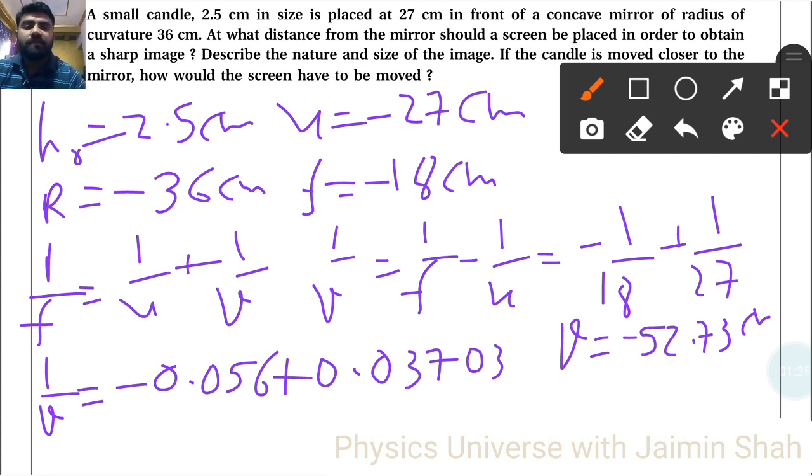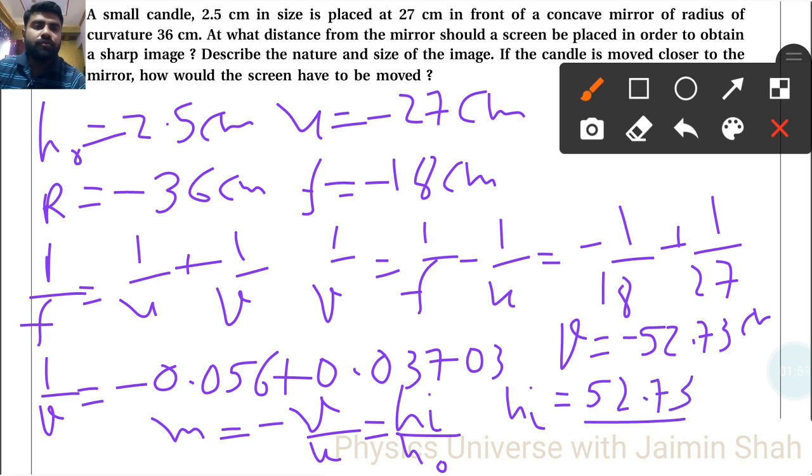To describe the nature and size of the image, we find magnification. M is equal to minus V upon U and is equal to HI upon HO. So HI is equal to minus V upon U into HO. Minus minus becomes positive 52.73 upon minus 27 into 2.5.